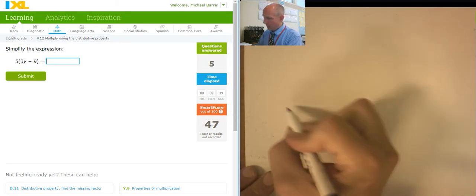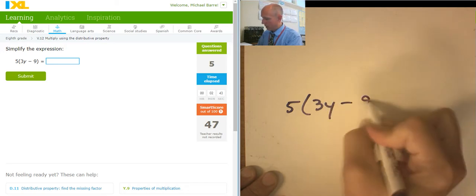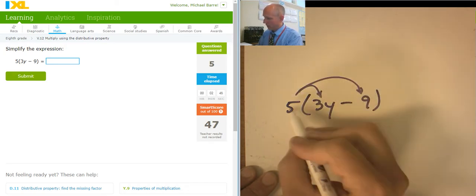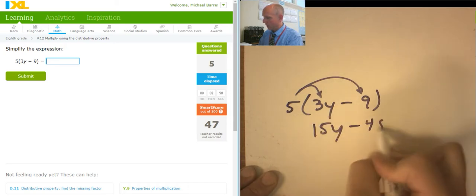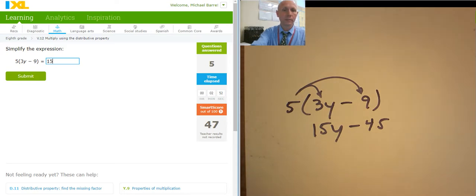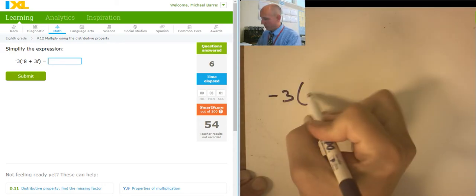So what's this one? 5(3Y-9). Jumps over. 5 times 3 is 15Y. 5 times negative 9 is negative 45. So, 15Y minus 45. Good. We have some different signs coming up now.